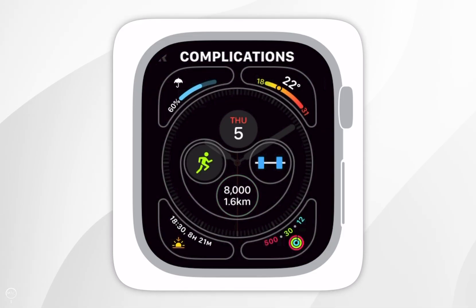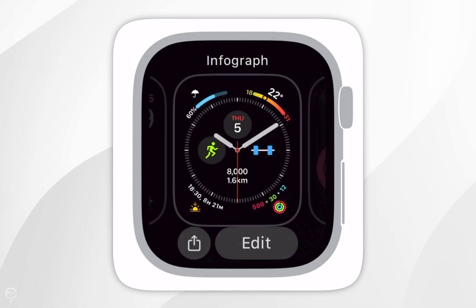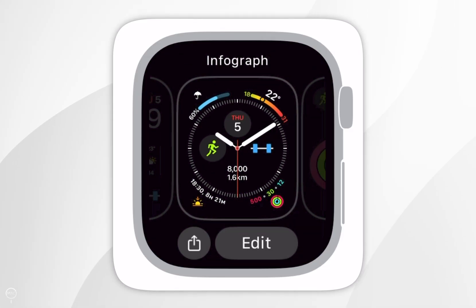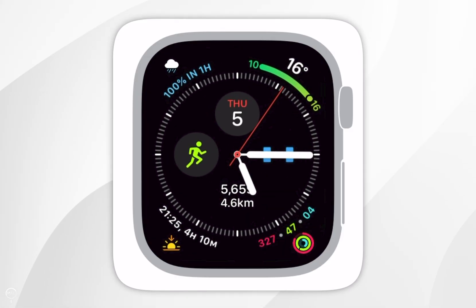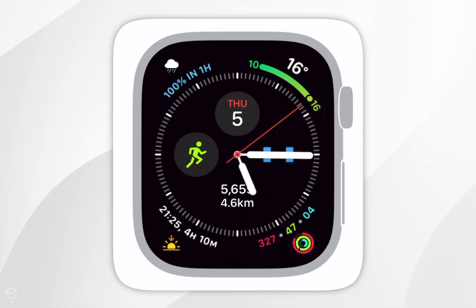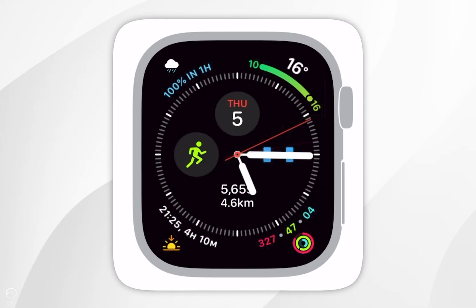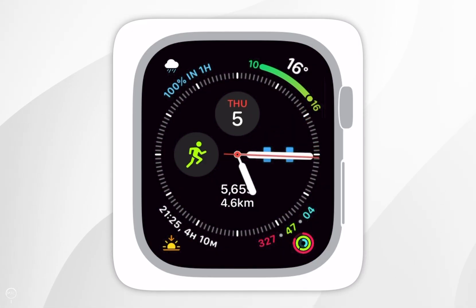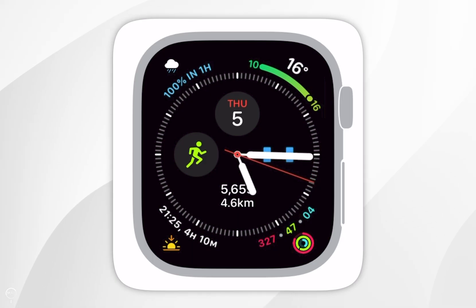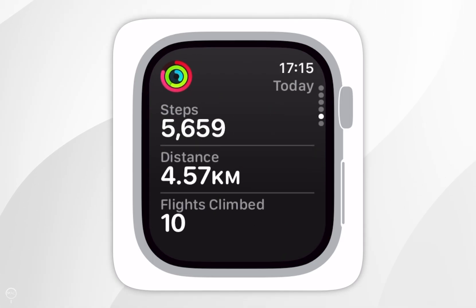Now that we've done this, you want to press the crown on the side of your Apple Watch, and then tap the face yet again, and now you've successfully added your step count to the face of your Apple Watch. I just want to note that this does also sync with the other data on your Apple Watch, so if we go into the activity application, as you can see, these steps are exactly the same.